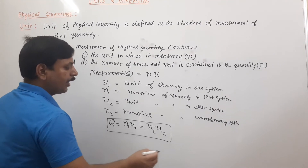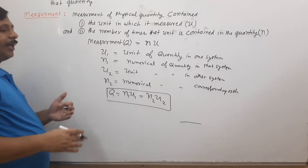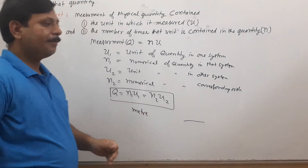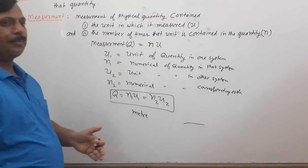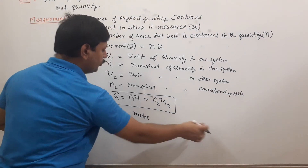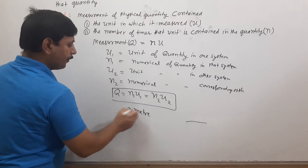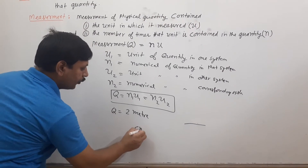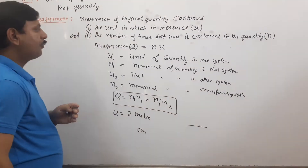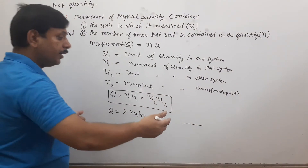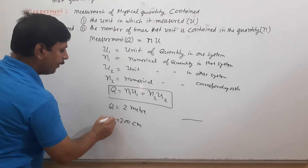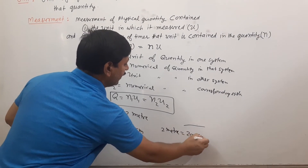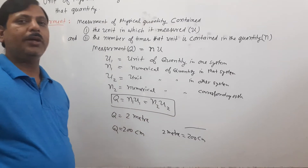For example, suppose I want to measure the length of a quantity. In the first system, unit U1 is meter, and experimentally I find it is 2 times 1 meter, so the measurement is 2 meters. In the second system, unit U2 is centimeter, and comparing the same quantity I find it is 200 times — so measurement is 200 centimeters. Therefore 2 meters equals 200 centimeters, confirming N1U1 = N2U2.